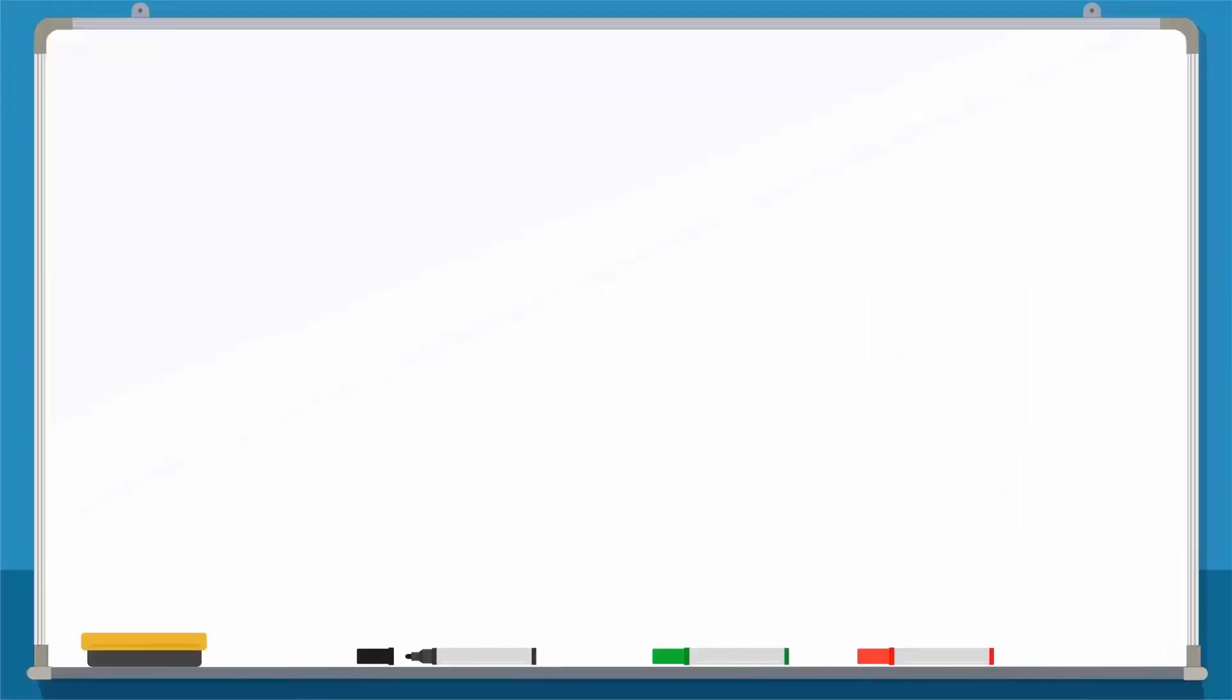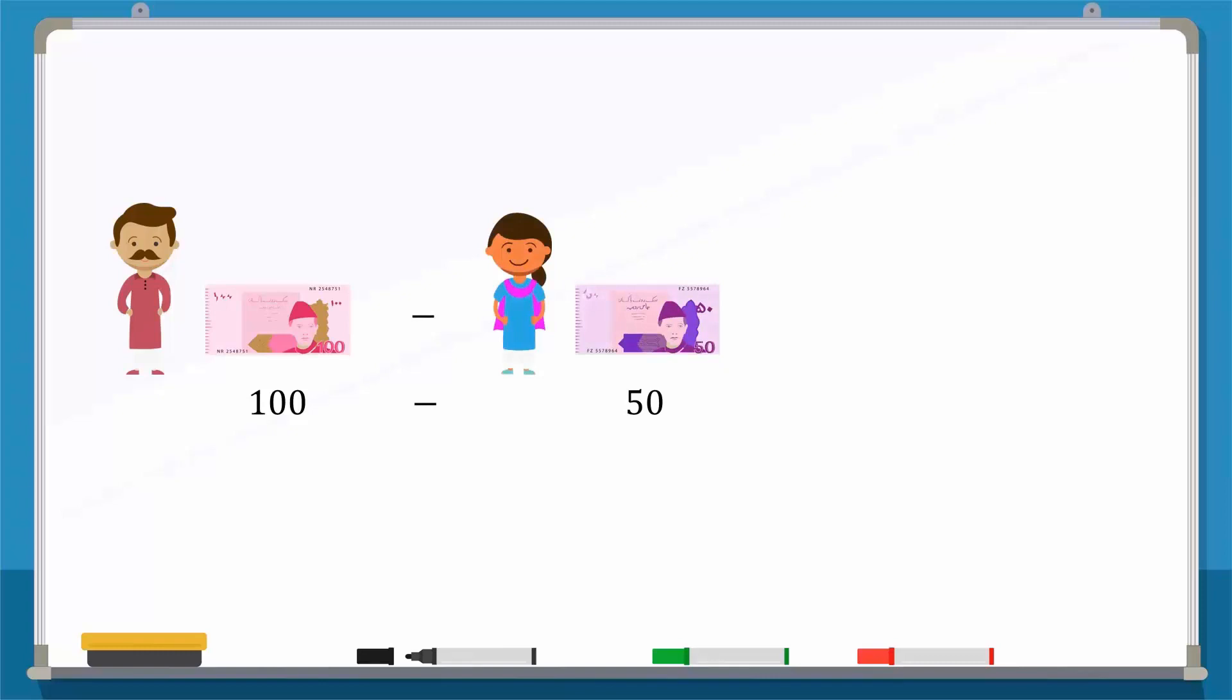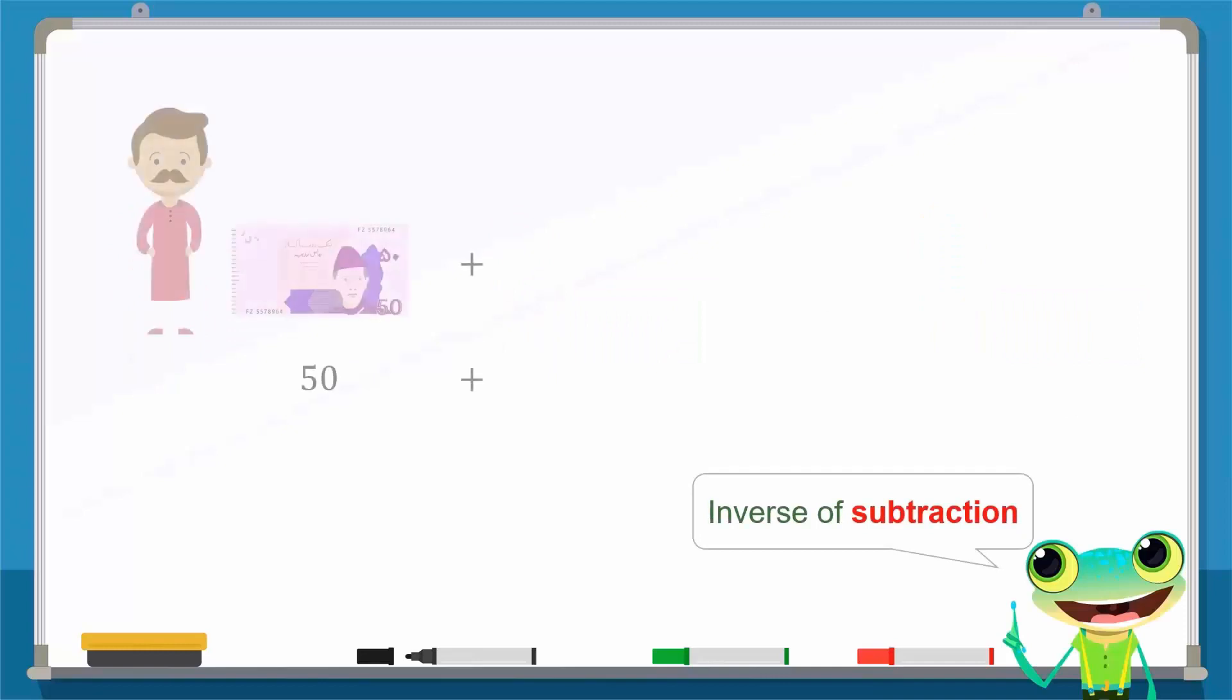If Ali has 100 rupees and he gives away 50 rupees to Fatma, we write it as 100 minus 50. This means that Ali has 50 rupees. If we want to find the inverse of this subtraction, we will add 50 rupees to the remaining 50, which will again give us 100 rupees.